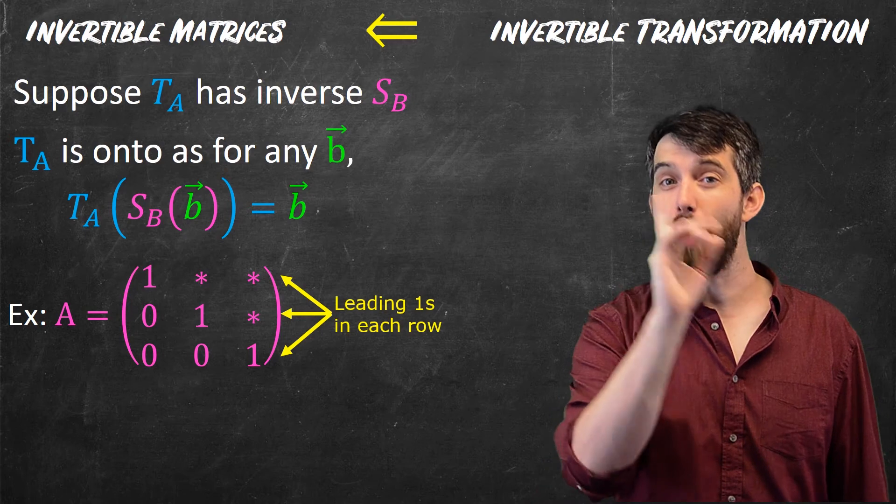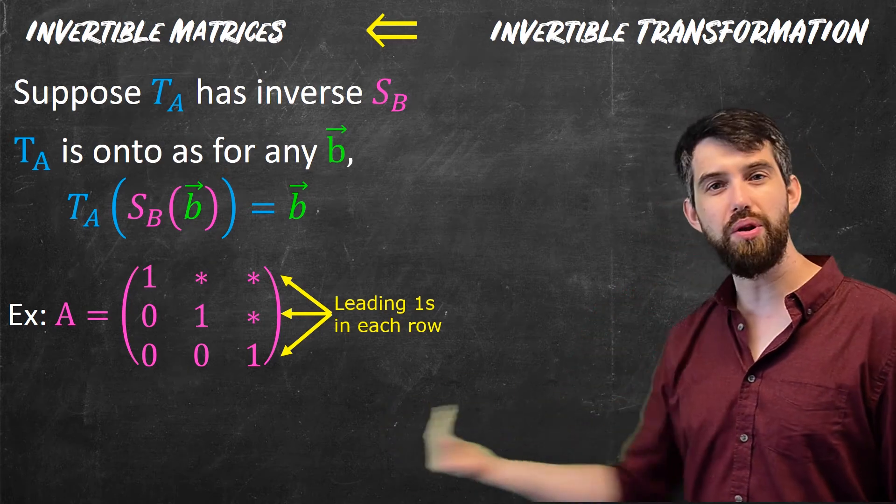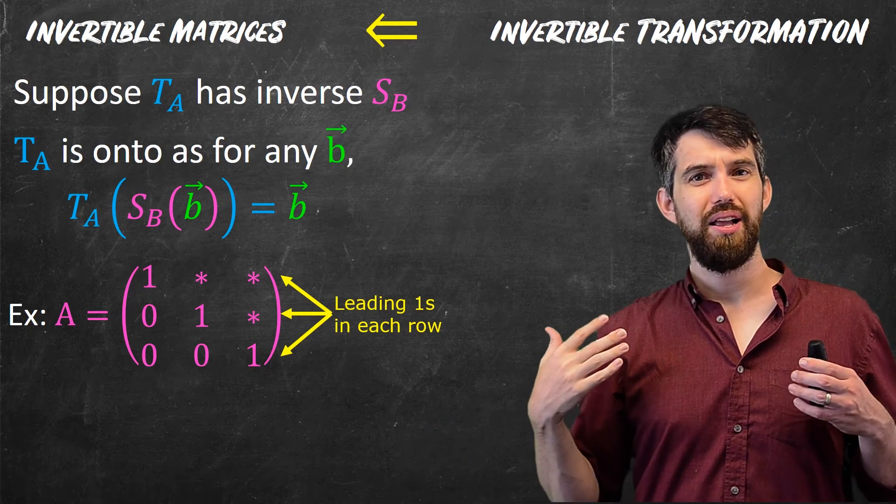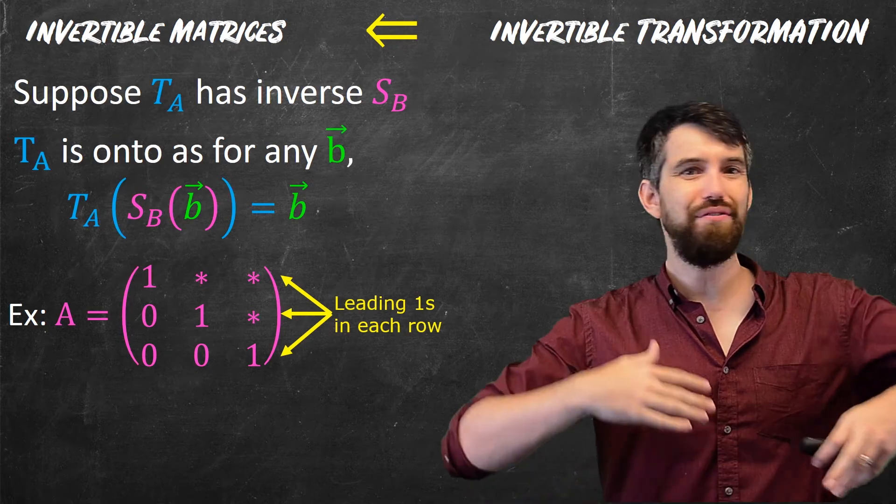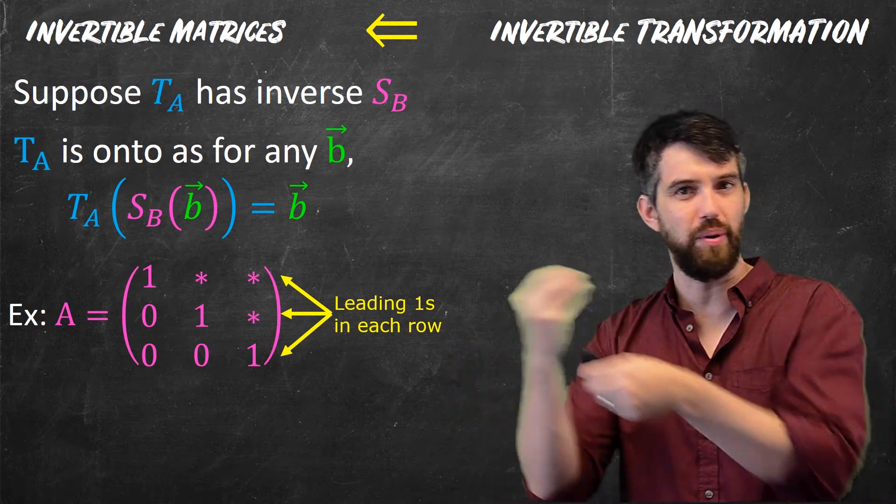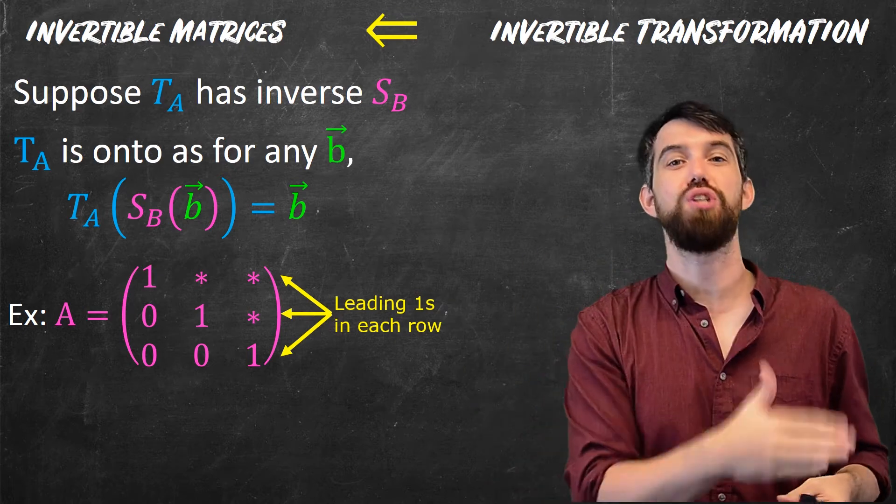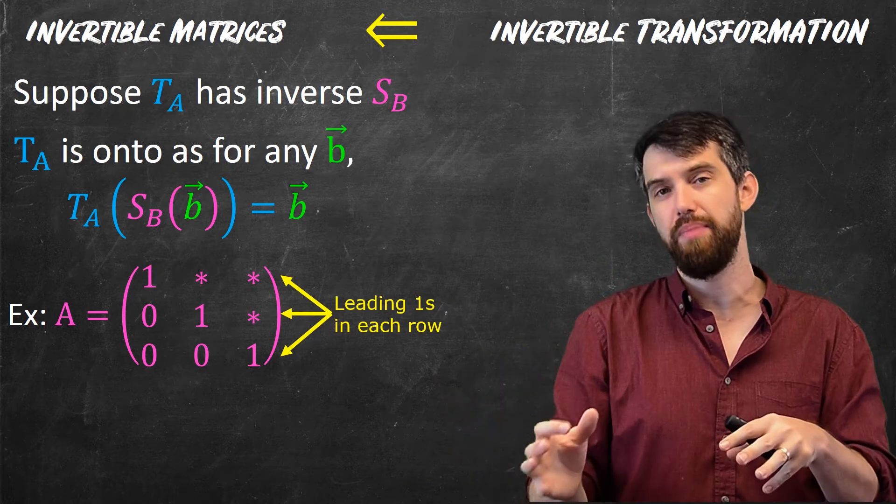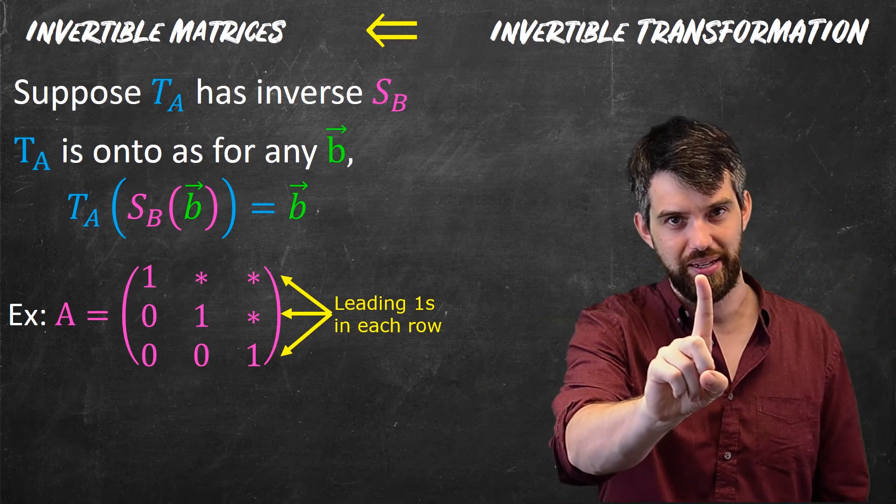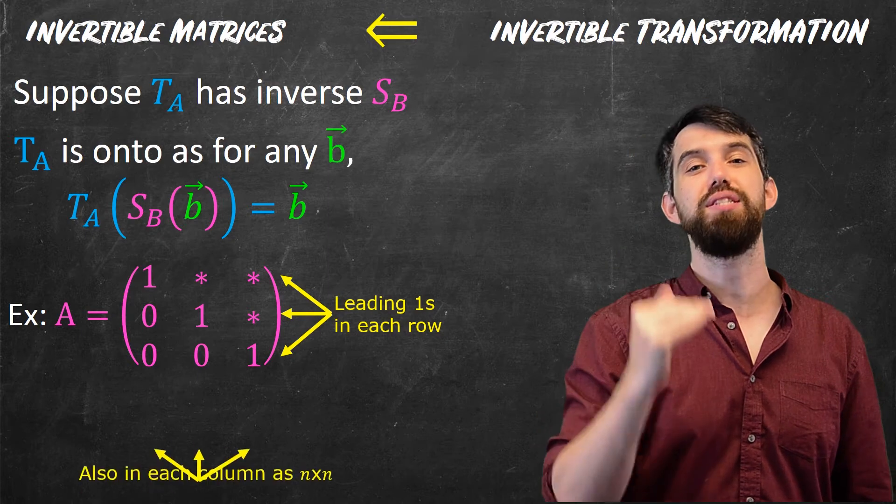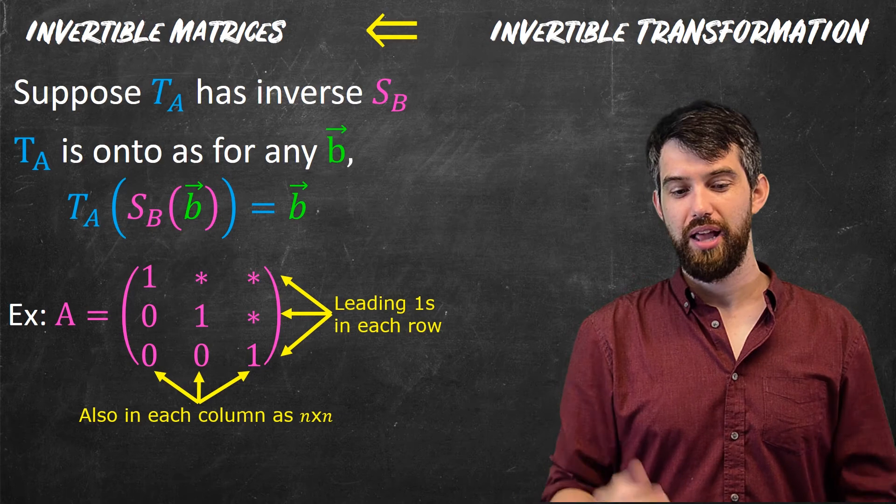But that doesn't quite get me all the way to saying this is invertible, because I have to worry about what's going on in the columns. However, this is an N by N matrix. To have any hope of a transformation being invertible, the dimensions have to match. So you have to have the same number of rows as columns, otherwise you're going to fail the one-to-one property at some point in the middle. And so the fact that I've got a leading one in every single row also means I have a leading one in every single column, because it's an N by N, or a squared matrix.